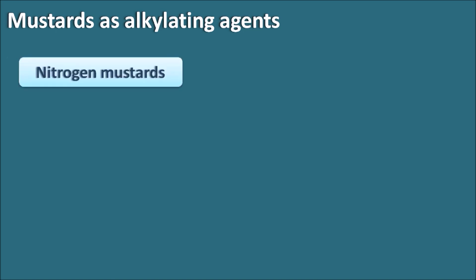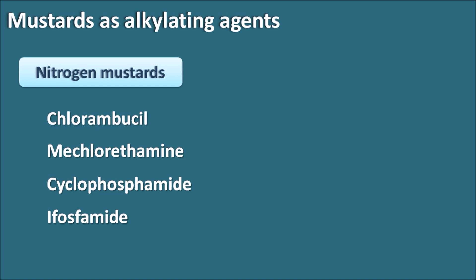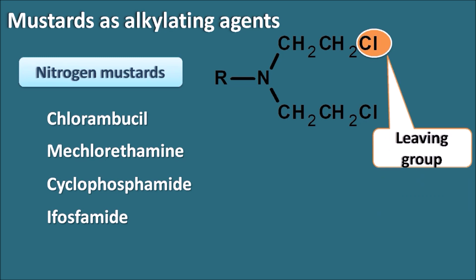Nitrogen mustards include drugs like chlorambucil, mechlorethamine, cyclophosphamide, and ifosfamide. All these drugs act like nitrogen mustards and have a common structure where the nitrogen is attached with CH2CH2Cl, having at the beta position a chlorine group which acts as a better leaving group.